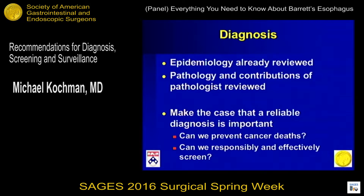Can we prevent the cancer, and can we also responsibly and effectively screen? If we're not accurate in the biopsies and over-calling Barrett's on the low end, we're going to have too many patients who may end up having ablative therapies that may not be needed. On the other hand, on the high end, if we resect a lesion that's intramucosal carcinoma and it turns out to be invasive carcinoma on review, that's not as big an issue down the road.